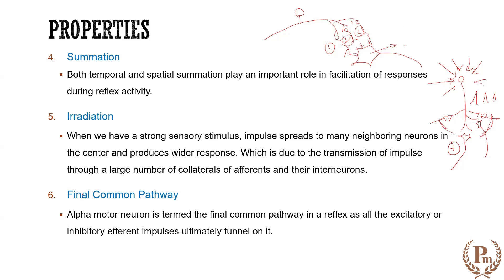Regarding the final common pathway: for spinal reflexes, the alpha motor neuron is the final common pathway. We also need to consider cortical and cerebral reflexes. The alpha motor neuron is called the final common pathway because all impulses — whether excitatory or inhibitory, coming from interneurons or directly — ultimately funnel onto it. Hence, the alpha motor neuron is termed the final common pathway.